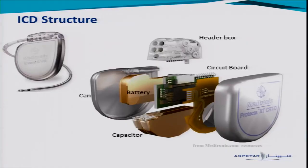What about the structure and function of the ICD? This is an exploded device. Basically it consists of a titanium can. Inside is the battery and the capacitor — the capacitor stores the charge, so when the device charges, the charge is stored here and then discharged to the patient. The battery and the capacitor are the two factors that determine the longevity of the device. This is the circuit board containing all the hardware for programming, and then the header box at the top where the leads are connected — the more leads you have, the bigger the header box.